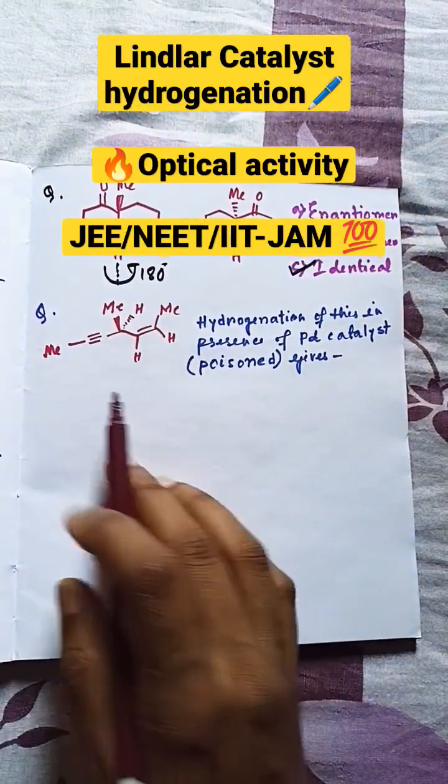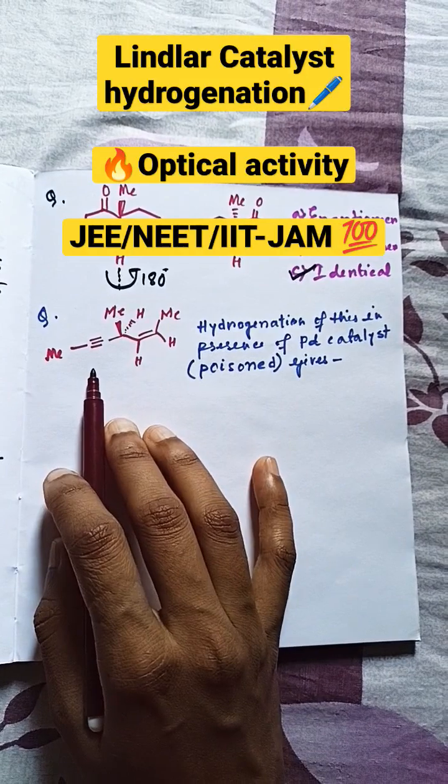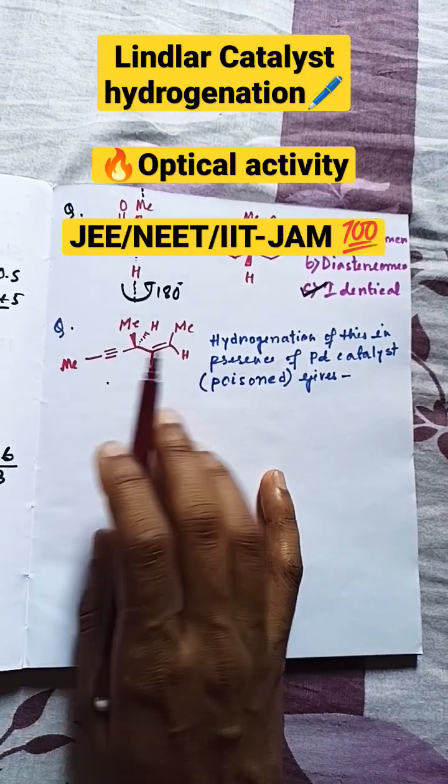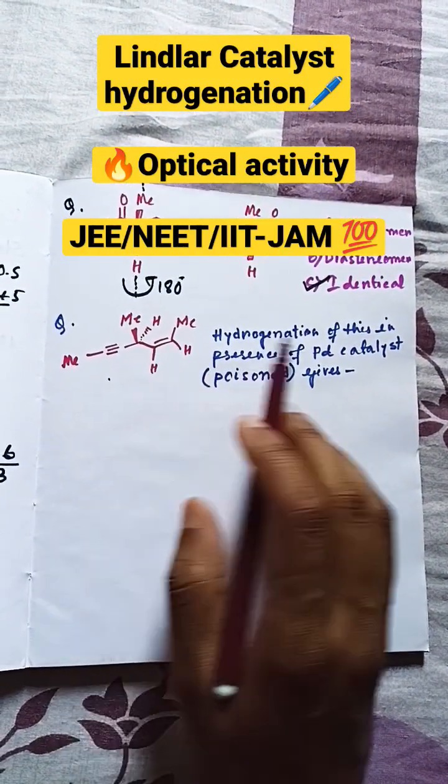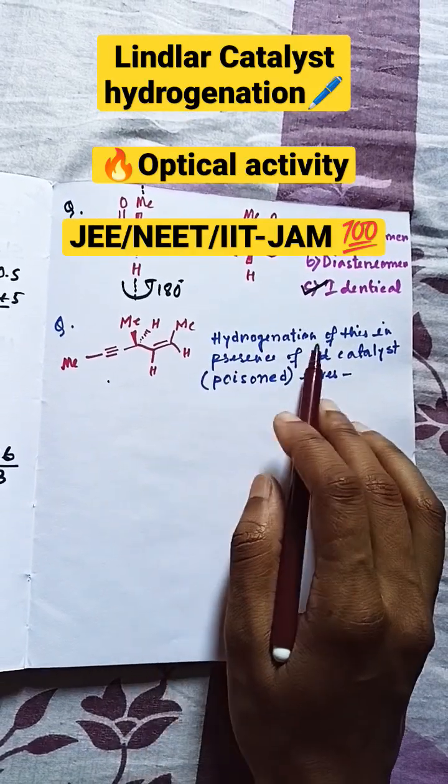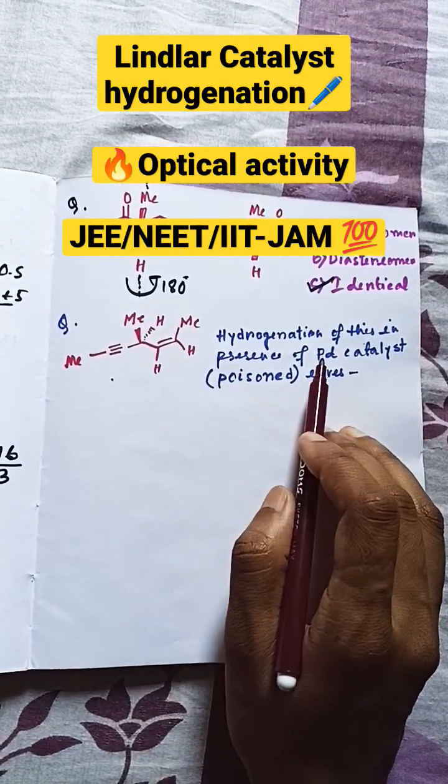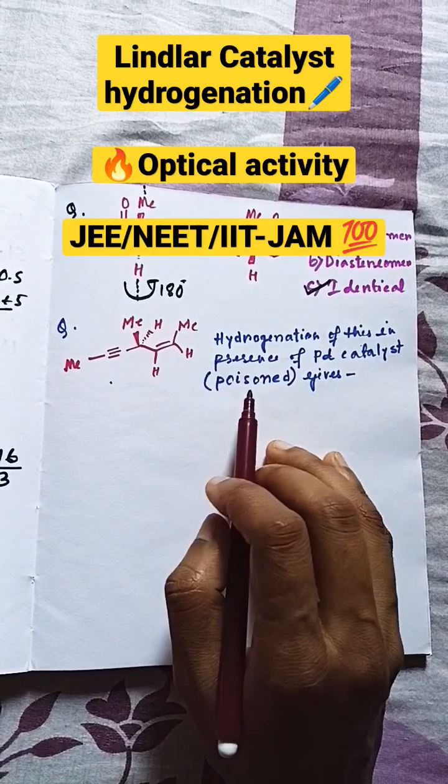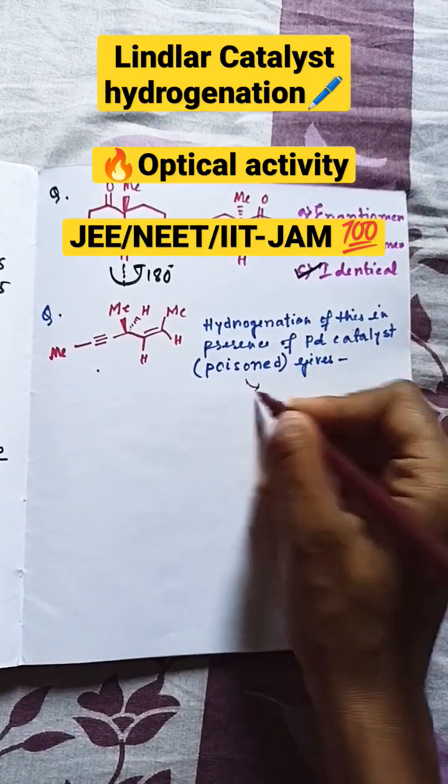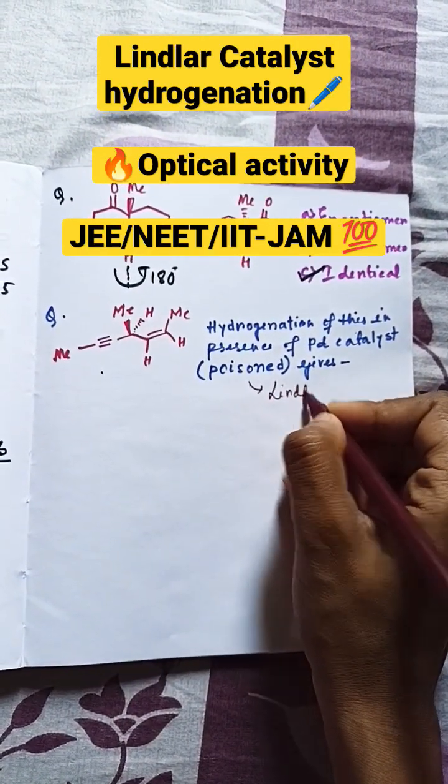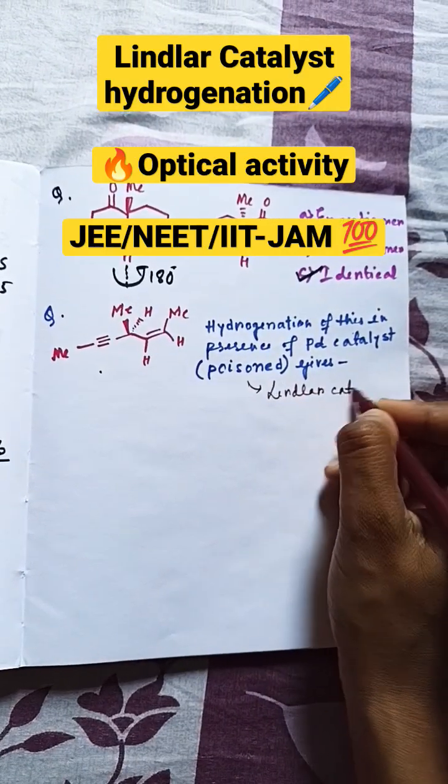Hello, so here's the question: a compound is given which has an alkyne bond and an alkene bond. Now, hydrogenation of this in presence of palladium catalyst, but poisoned—that means it is Lindler catalyst. Let me know in the comment section whether you know about Lindler catalyst or not.